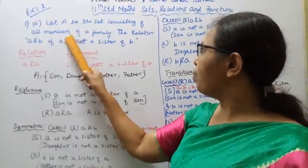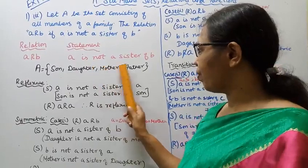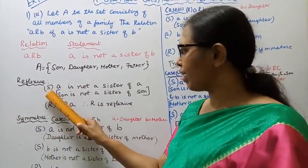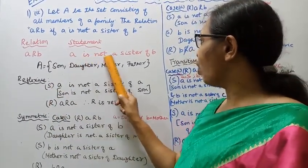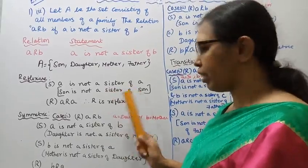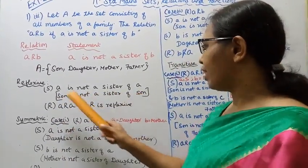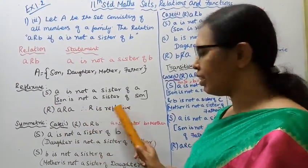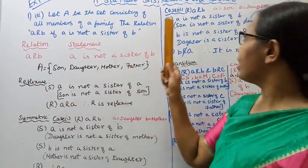The family set includes son, daughter, mother, father, and so on. For reflexive, we check the statement: is a not a sister of a? For example, son — is son not a sister of son? A son cannot be a sister, so son is not a sister of son. Therefore a is related to a, so the relation is reflexive.